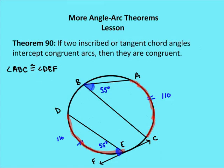Theorem 90: If two inscribed or tangent-chord angles intercept congruent arcs in the same circle, then they are congruent. Here I have two congruent arcs AC and DFE, so I know that angle DEF and angle B are going to be congruent because inscribed or tangent-chord angles are half the measure of the intercepted arc.